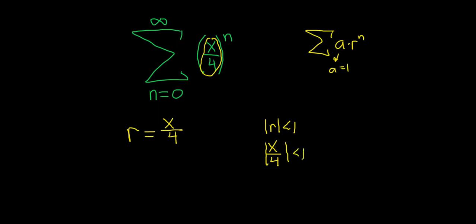And whenever you have the absolute value of x over 4, you can write that as the absolute value of x over 4 because the absolute value of 4 is 4. We can then multiply by 4, so times 4 times 4. That gives us the absolute value of x is less than 4.